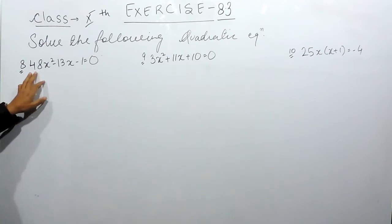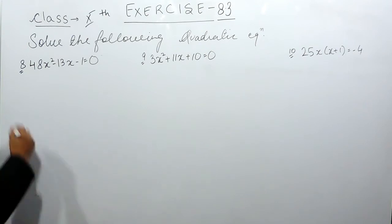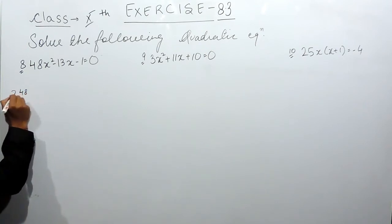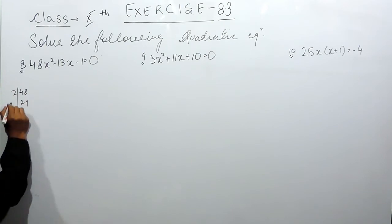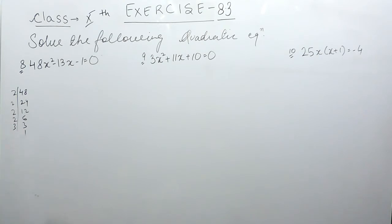So in the first part, we have to do the prime factorization of 48 and then we have to arrange that in such a manner that we get 13. So 48 is 2×24, 2×12, 2×6, 2×3, and 3×1. Now how to arrange this?